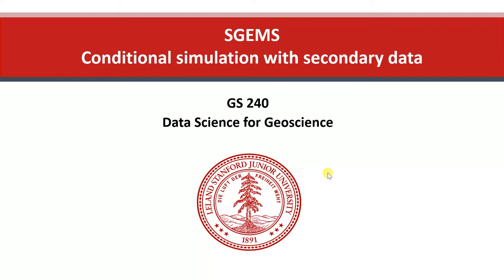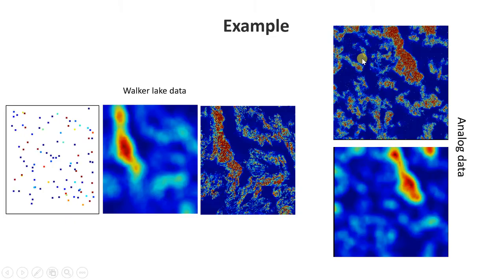In this tutorial on SGEMS, I will be presenting conditional simulation with secondary data, and particularly focus on the co-located co-kriging methods. I'll be using the exhaustive Walker Lake dataset, where we have one variable which is the DM, which is highly varying, and we have another variable which is a low-varying variable that tells you a little bit about average DM.